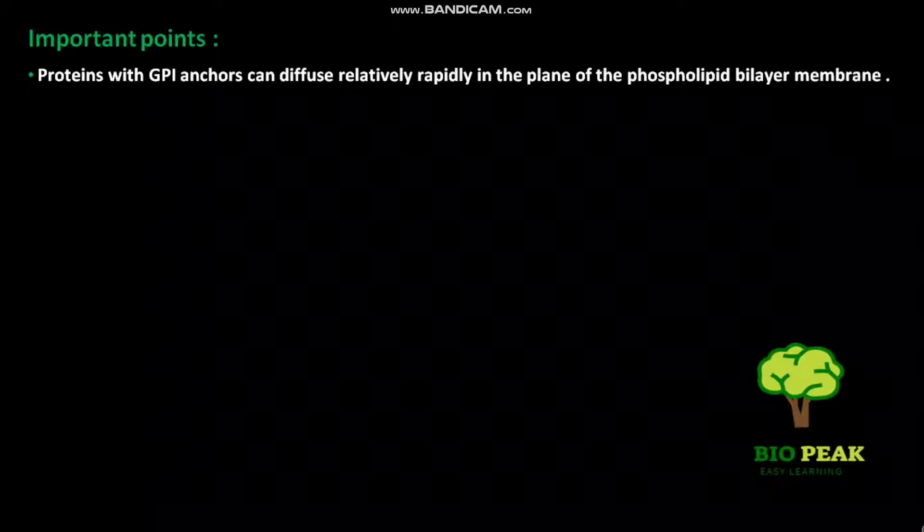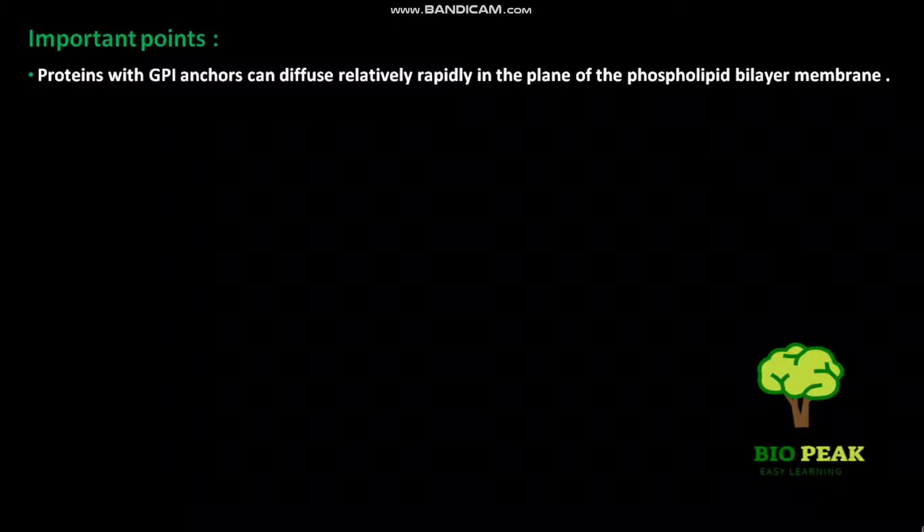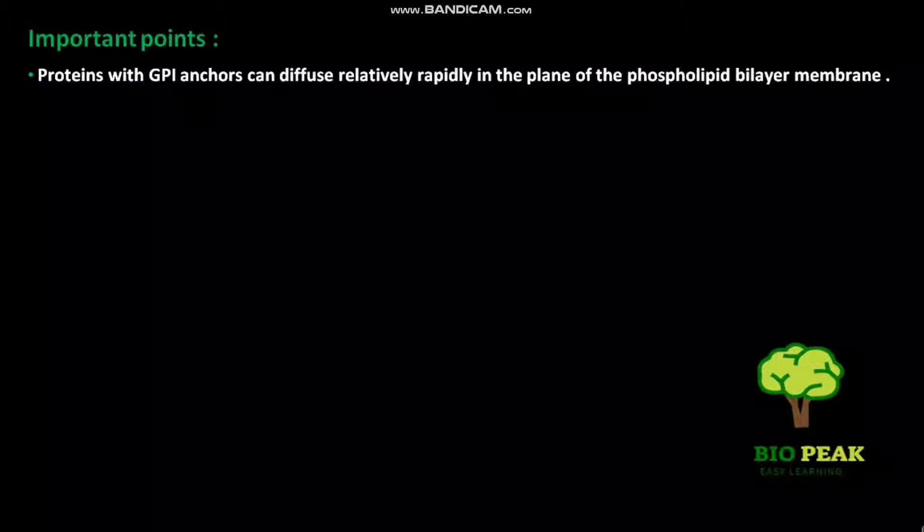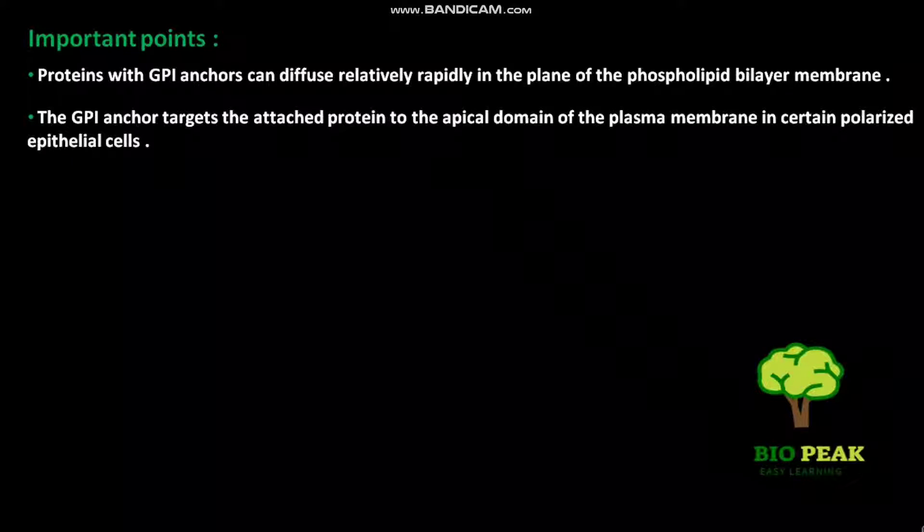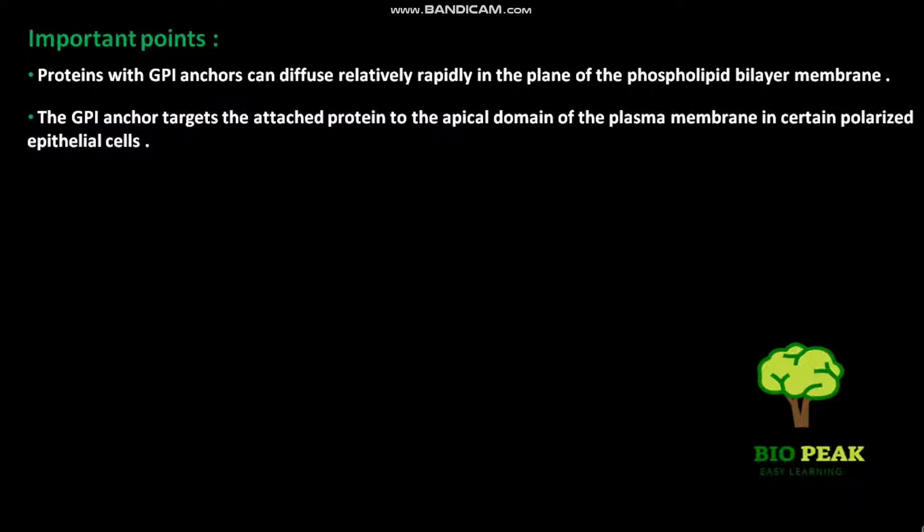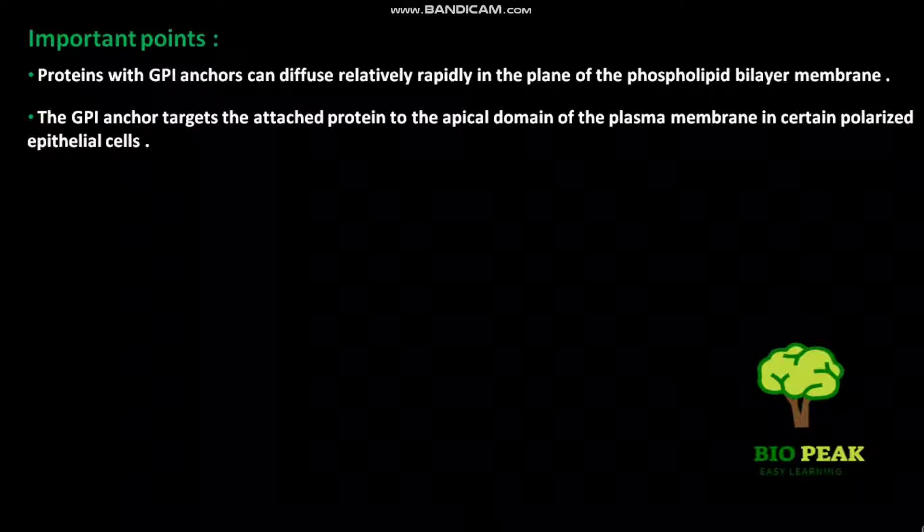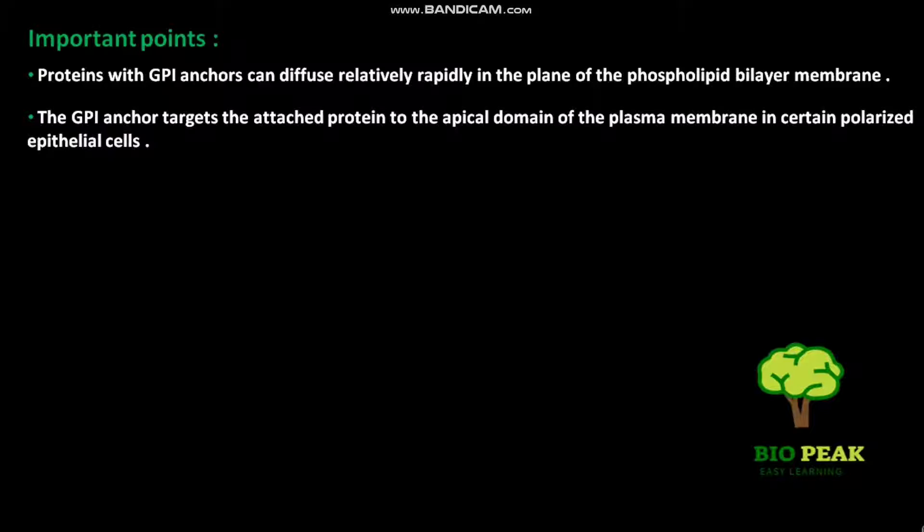Proteins with GPI anchors can diffuse relatively rapidly in the plane of the phospholipid bilayer membrane. The GPI anchor targets the attached protein to the apical domain of the plasma membrane in certain polarized epithelial cells.